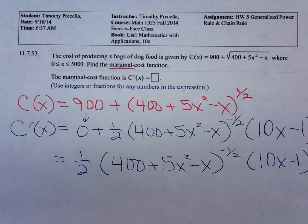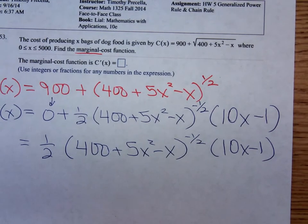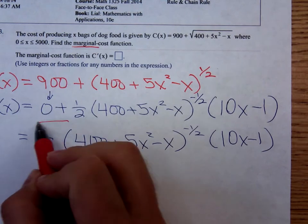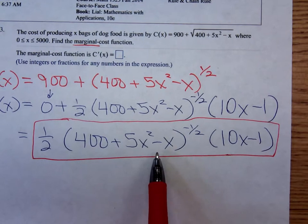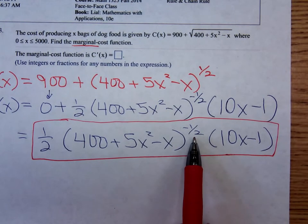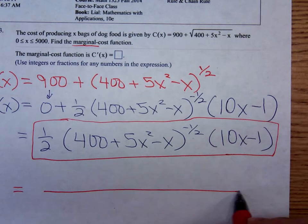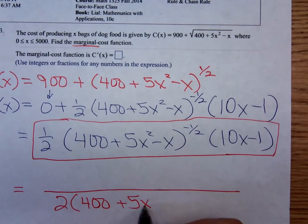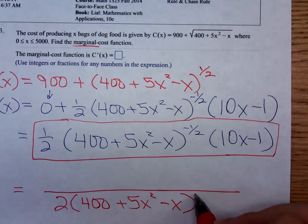And when you're punching that into MyMathLab, oh let me move this over some, wrong way there, MyMathLab will accept that as a final answer. That is an acceptable final answer. But let's suppose we wanted to - I know some of y'all dislike negative exponents - so we could pick that factor up with the negative exponent. We already have a fraction bar, move it down there to the denominator. So we have the two, we have the 400 plus 5x squared minus x. By moving it down the negative exponent becomes positive.